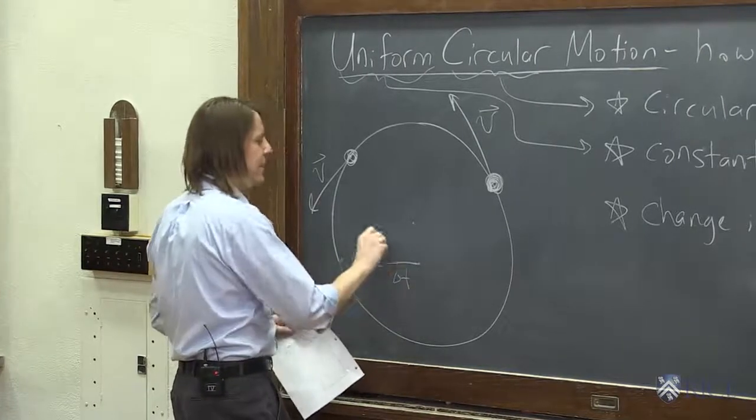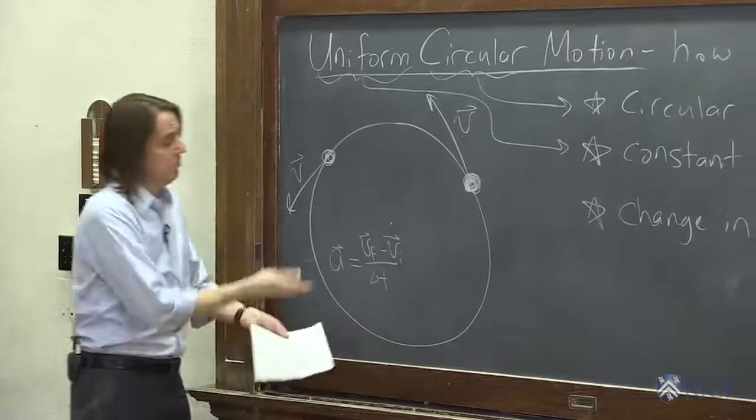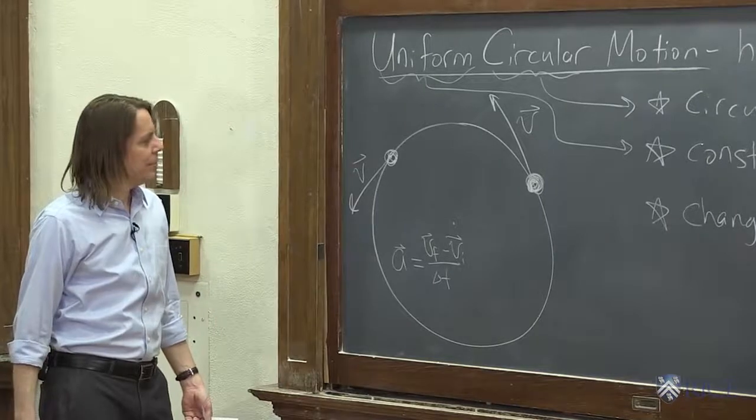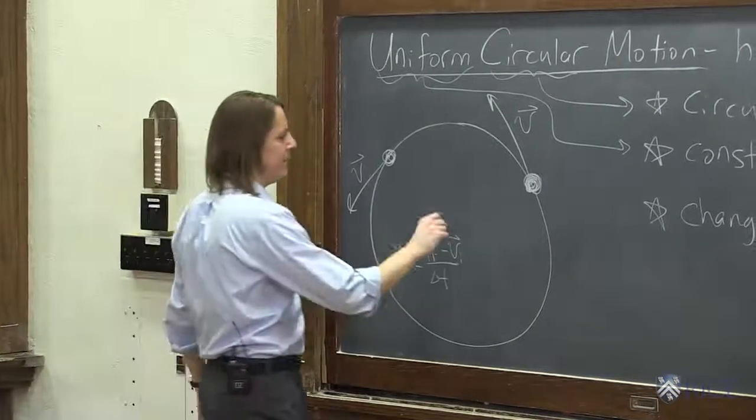So we could say over delta t, it's v final minus v initial. That's what it should be, as we talked about before. So what we can do right now is pick two times, and label them v final and v initial, and just see if we can figure it out.